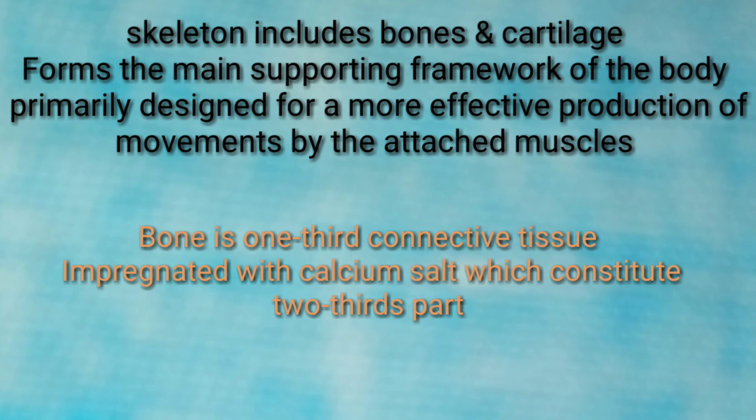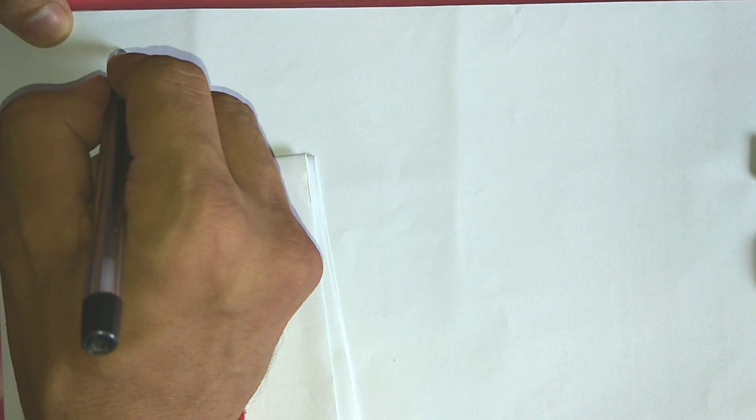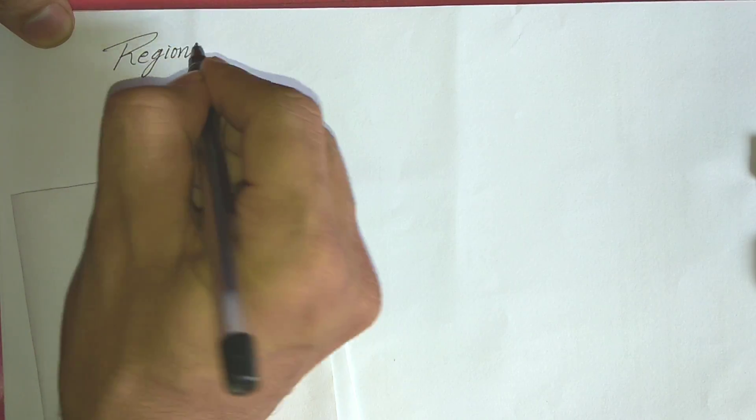Bone is one-third connective tissue, impregnated with calcium salt which constitutes the two-third part. Impregnated means soak or saturated. Here the calcium salt is getting saturated in the bone.